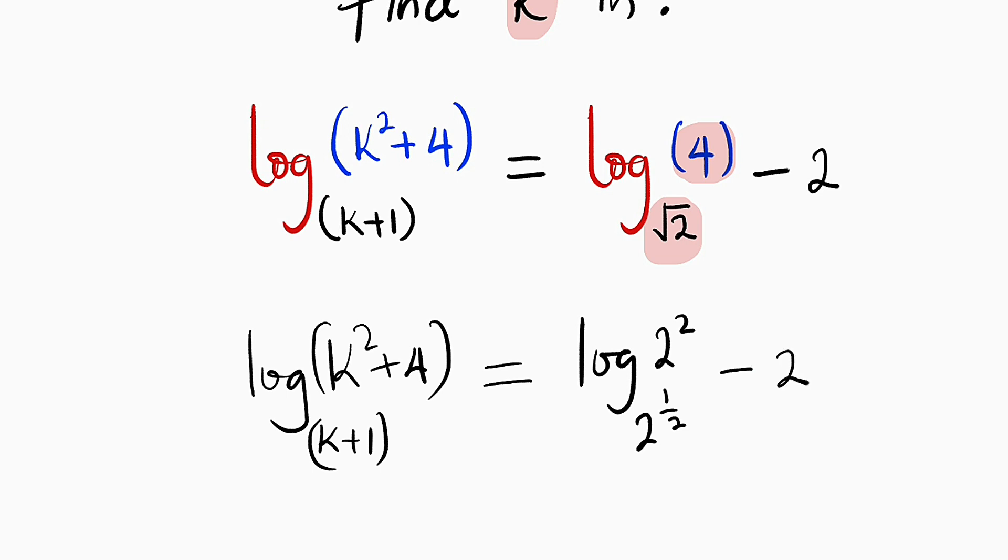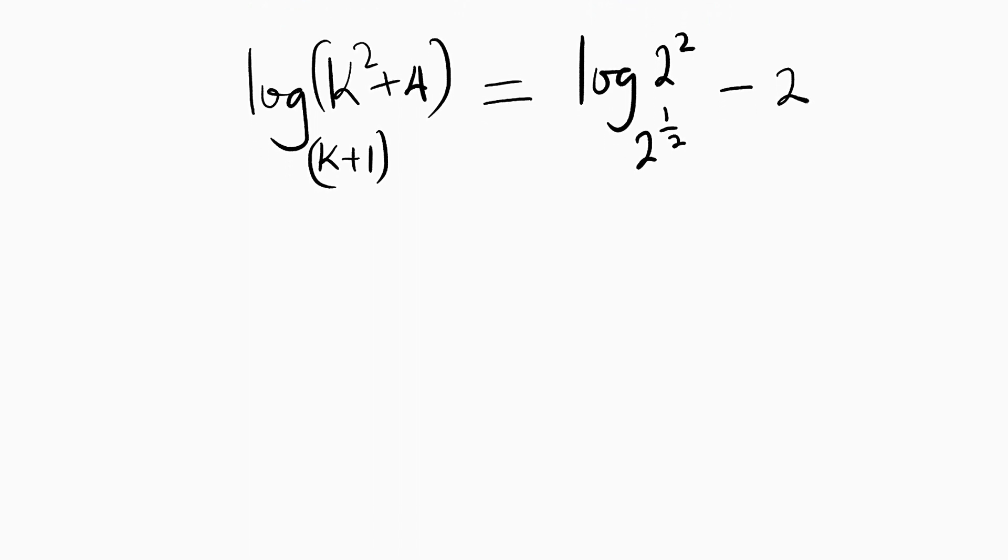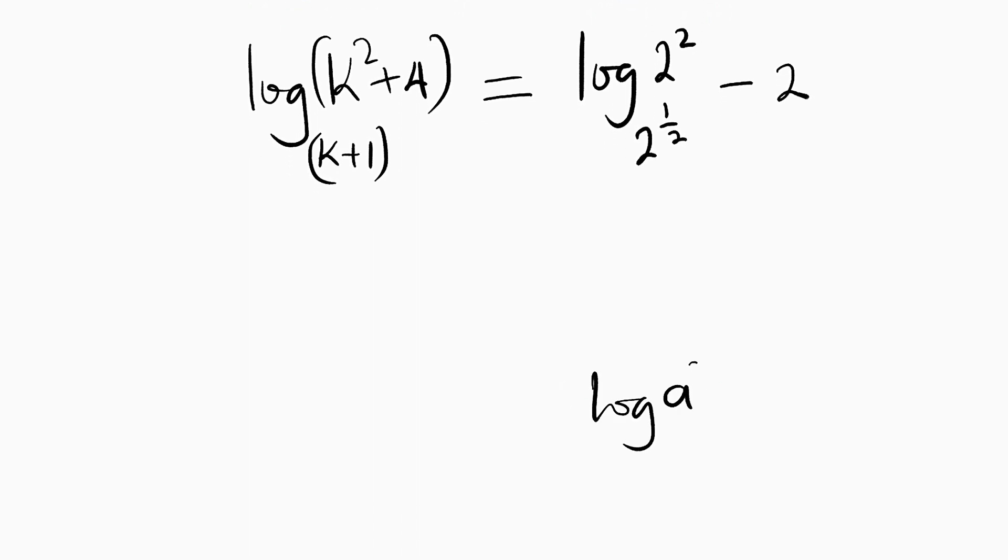I want to remind you about one of the laws of logarithm that stated that if you have log of a raised to the power of x with the base of a raised to the power of y, provided that we have a and a here, the solution to this problem is just x divided by y. So we can relate this and what we have here. So the right hand side becomes only 2 divided by 1 over 2, then minus 2.